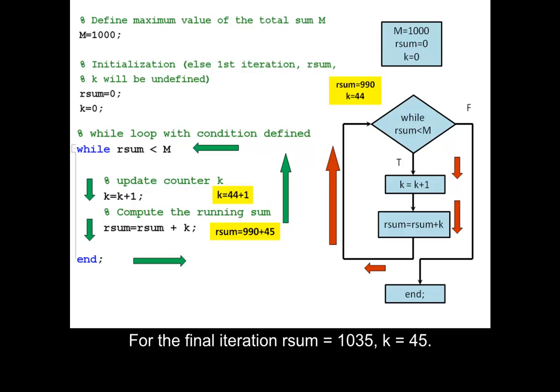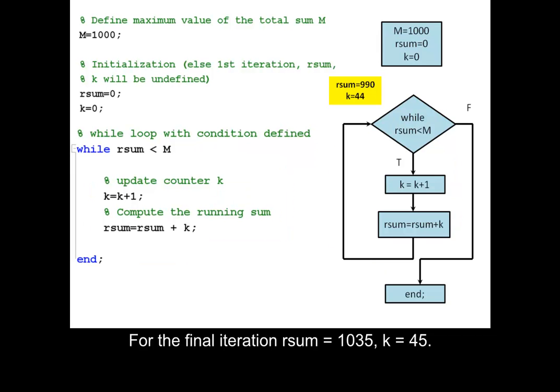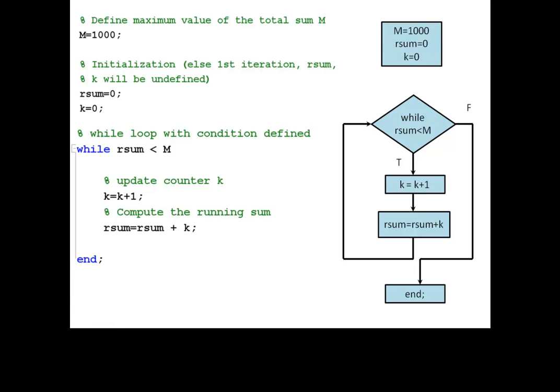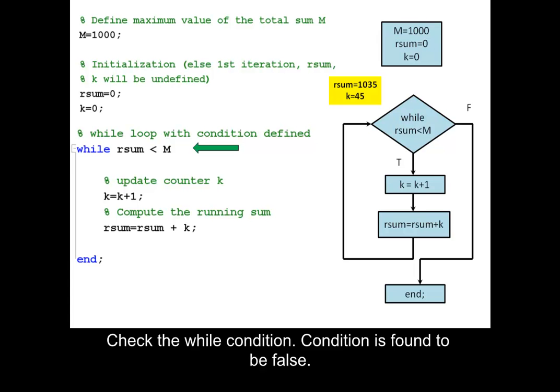For the final iteration, rsum equals 1035 and k equals 45. Check the while condition — condition is found to be false.